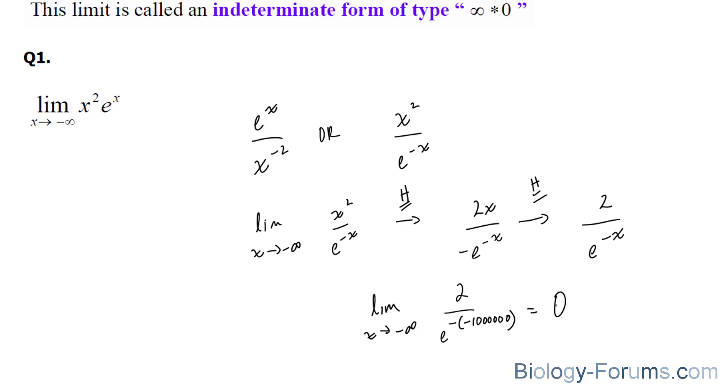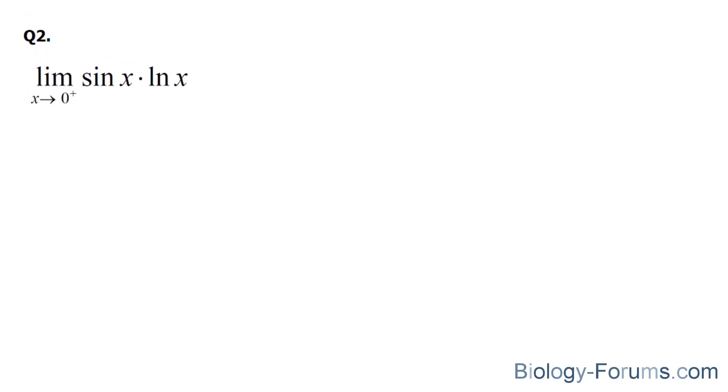Let's move on to question 2. In question 2, they're asking us to find the limit as x approaches 0 on its positive end for the function sine x times ln x.